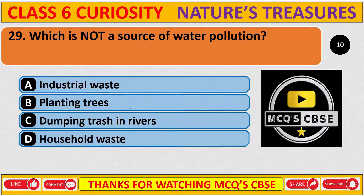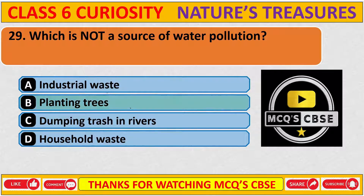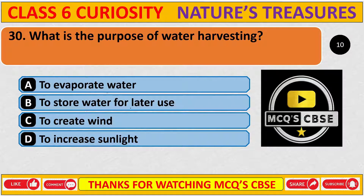Which of the following is not a source of water pollution? The correct answer is B: Planting trees.